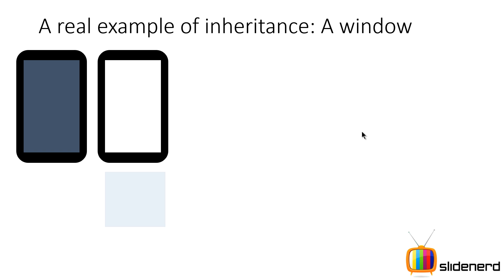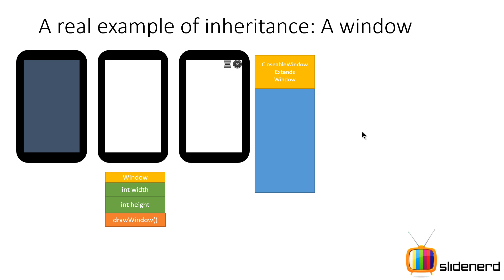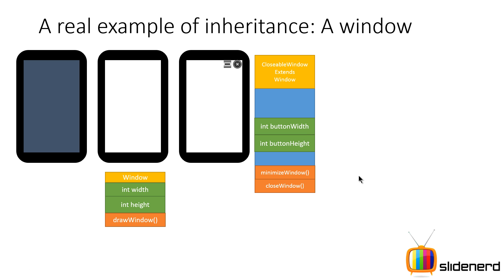Let's see how the same thing works with inheritance. I have the same Window class. Now, I know that CloseableWindow will have the same functions as a normal Window plus some extra stuff like the two buttons. So all I define in CloseableWindow are the new variables: button width, button height, minimizeWindow, and closeWindow. What is already created by the Window class I do not code again inside CloseableWindow — I've minimized my work.